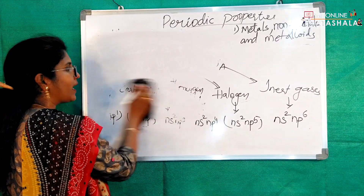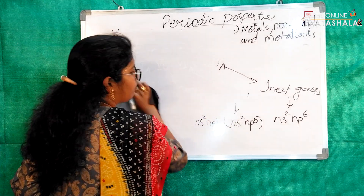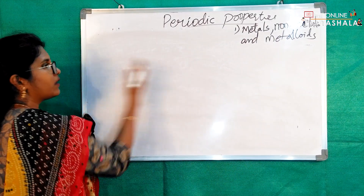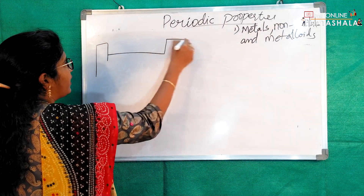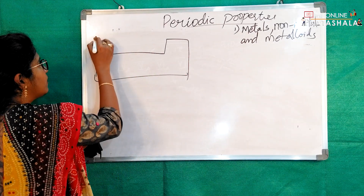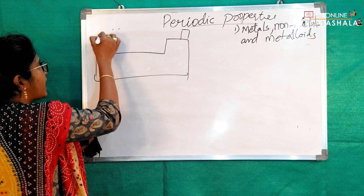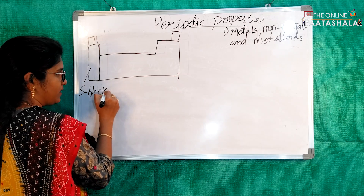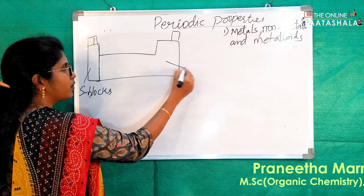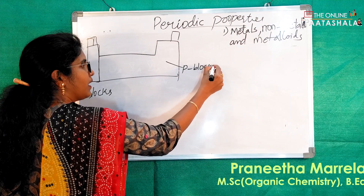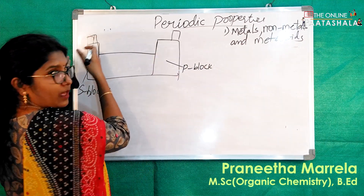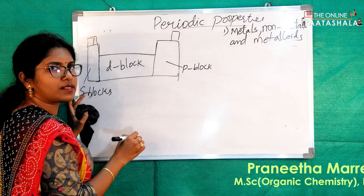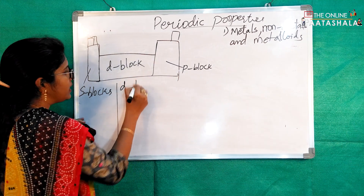S block elements are present on the most left side of the periodic table. On the total right side of the periodic table are the P block elements. In between the S and P blocks, you will find the D block elements.